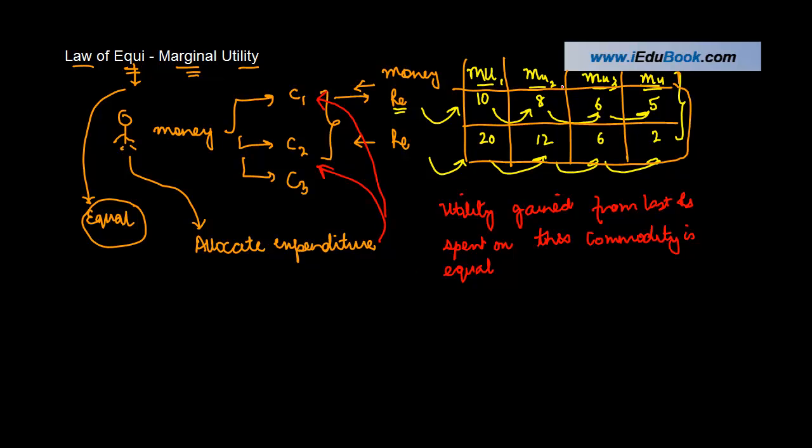So in the first example that we took, we know that the utility gained from these two, when you spend three rupees each on them, is equal. So this is the point where the consumer is in equilibrium.